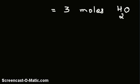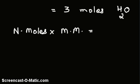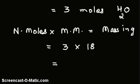Now let us convert the moles into grams. Number of moles into the molar mass equals mass in grams. Therefore, mass in grams equals 3 into 18, that is equal to 54 grams. That is our answer.